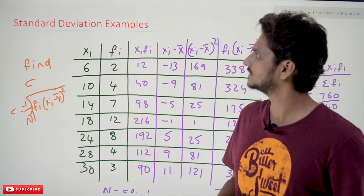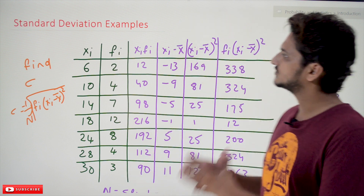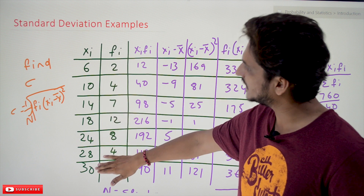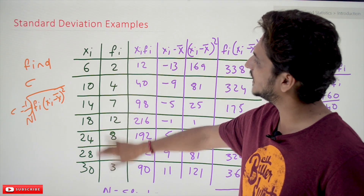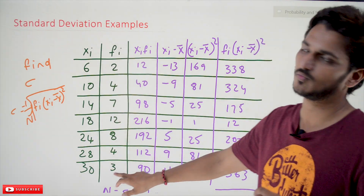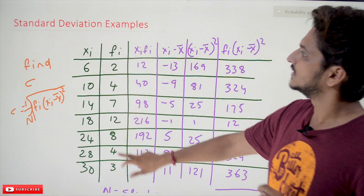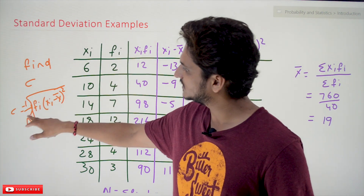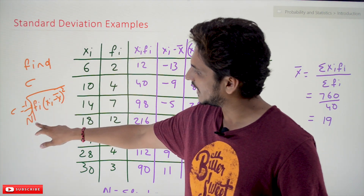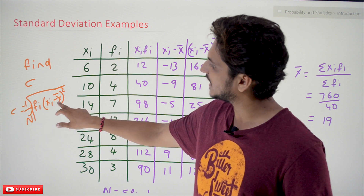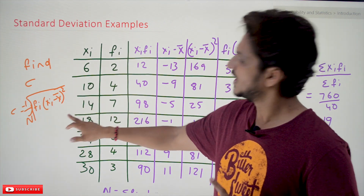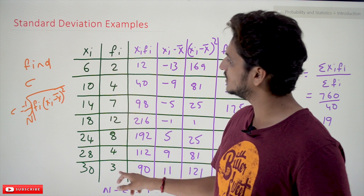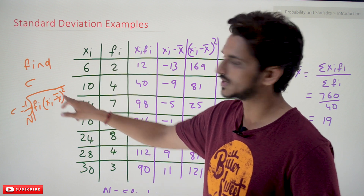Coming to today's class, let's take this example. A list of data has been provided and frequencies (fi) are provided. If you want to identify the standard deviation, the equation is: Sigma = (1/N) × √(Σ fi(xi − x̄)²). Here N means number of data points, fi means frequency values, and xi − x̄ involves the mean value.